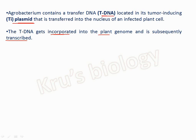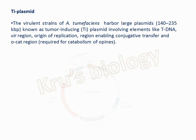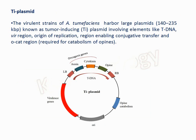Agrobacterium tumefaciens causes crown gall disease. Agrobacterium rhizogenes causes hairy root disease. Agrobacterium vitis causes galls on grapevines. Agrobacterium radiobacter is an avirulent species that does not cause any disease in plants.